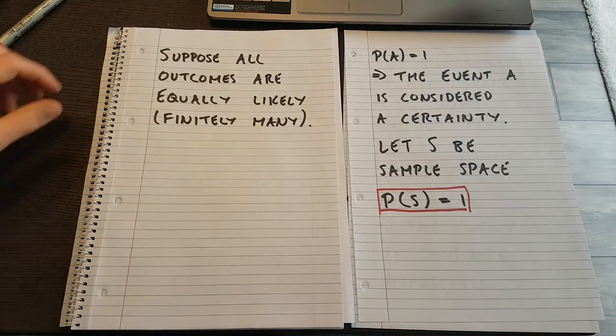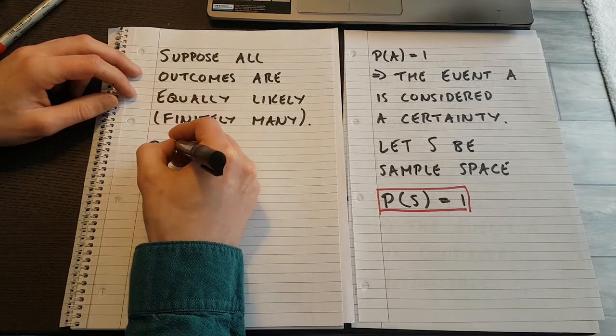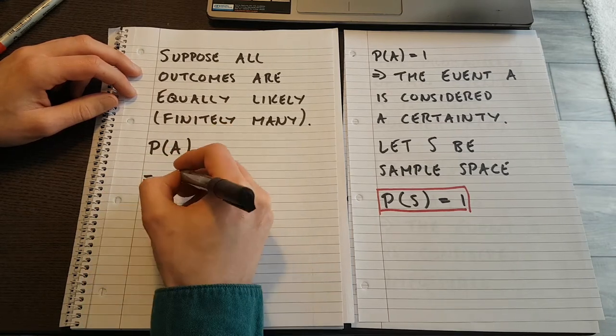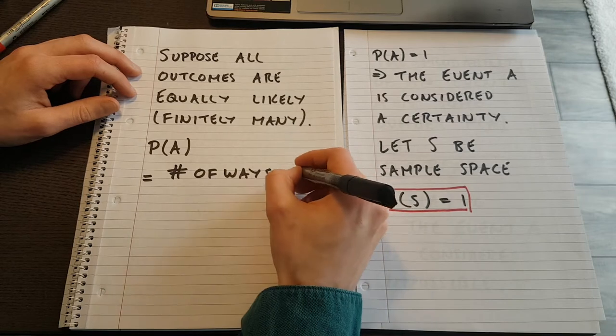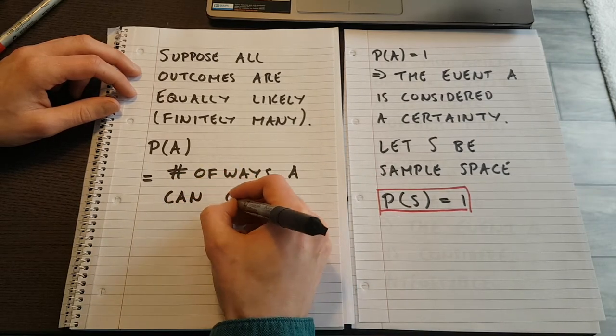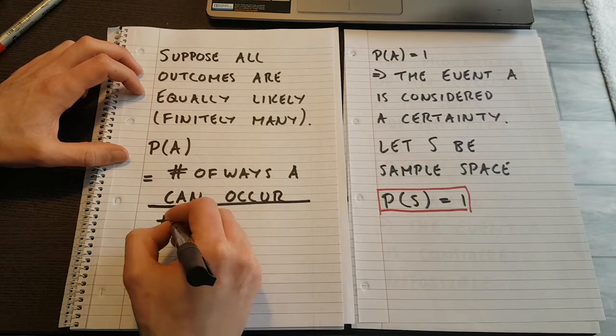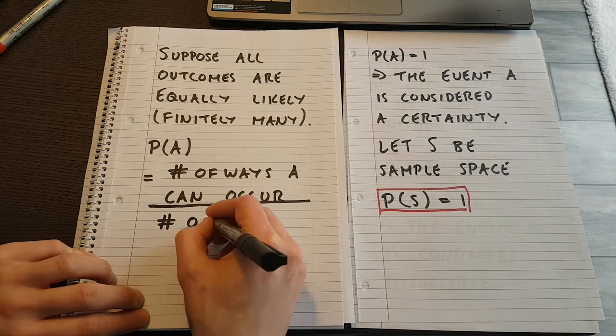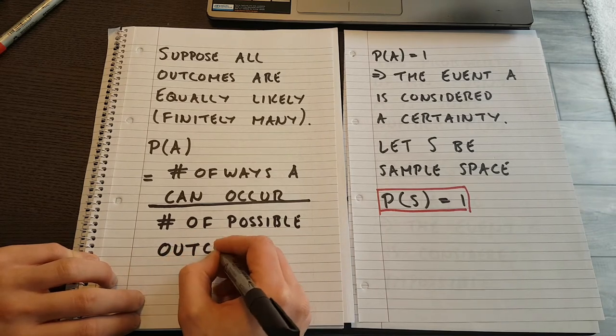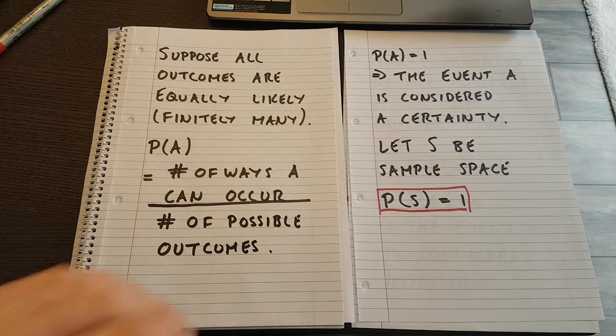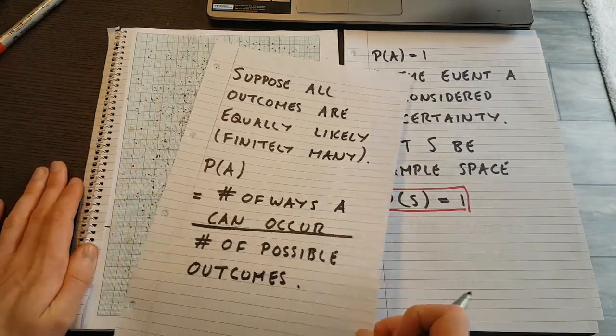Well in this case, what is the probability of A? Well, the probability of A, then, is equal to the number of ways A can occur. And I would need to divide that by the total number of possible outcomes. And you'll see what I mean.